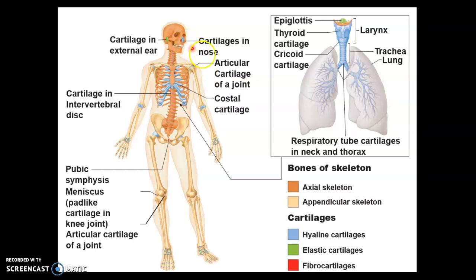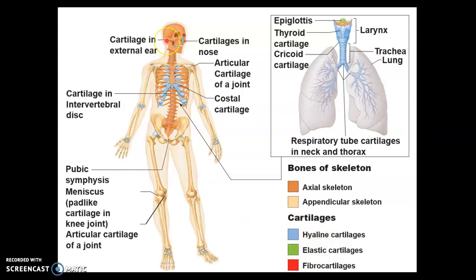Hyaline cartilage is also found at the nasal cartilage and in the respiratory tract. Fibrocartilage is only found in three places: the pubic symphysis, the meniscus in the knee, and your intervertebral discs. Elastic cartilage is found in two places: the cartilage of the external ear and the epiglottis. Note that they begin with the letter E, just like elastic cartilage does.